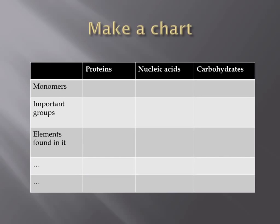One very simple, effective thing that you can do to see the big picture is illustrated here. Make a chart. For a unit on biochemistry, we might discuss four different types of biomolecules: proteins, nucleic acids, carbohydrates, and lipids. For each of these biomolecules, we would discuss a ton of different things.